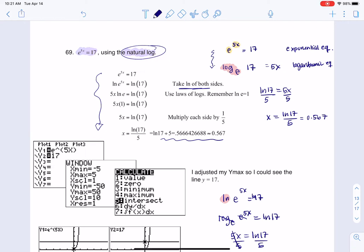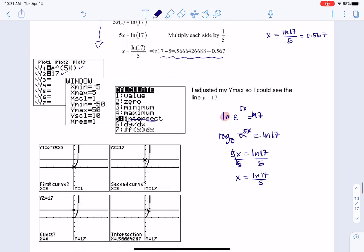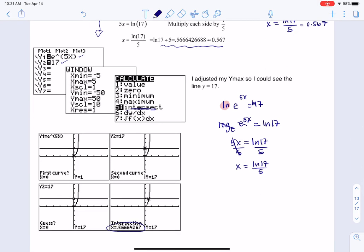And then the last part of this question said, hey, can you check the answer on your calculator? So I put the left side of the equation in y1, the right side in y2. I had to adjust the window a little bit so I could see it. And then I looked for the intersection. And when I do that intersection, sure enough, that answer 0.567 is coming up. So I've actually got this equation solved in three different ways.